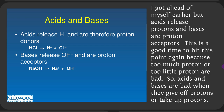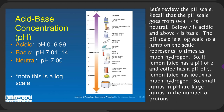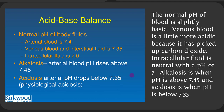Acids release protons and bases are proton acceptors. Too much or too little proton is bad. Let's review the pH scale: it goes from 0 to 14. A pH of 7 is neutral (pure water); below 7 is acidic; above 7 is basic. The pH scale is a log scale, so a jump on the scale represents 10 times as much hydrogen. If lemon juice has a pH of 2 and coffee has a pH of 5, lemon juice has 1,000 times as much hydrogen. The normal pH of blood is slightly basic. Venous blood is a bit more acidic because it has picked up carbon dioxide. Intracellular fluid is neutral at pH 7. Alkalosis is pH above 7.45; acidosis is pH below 7.35.